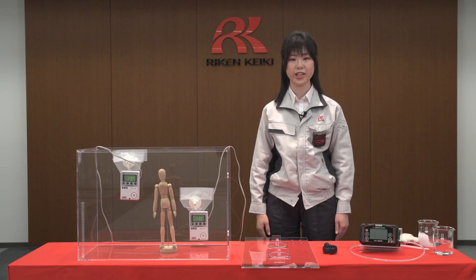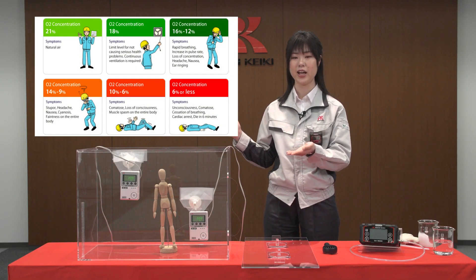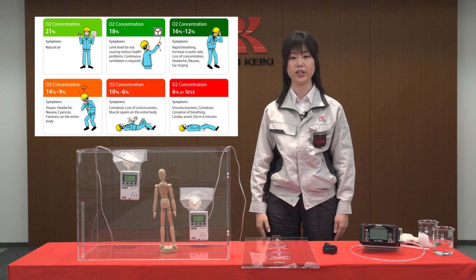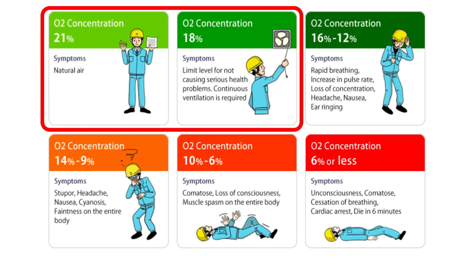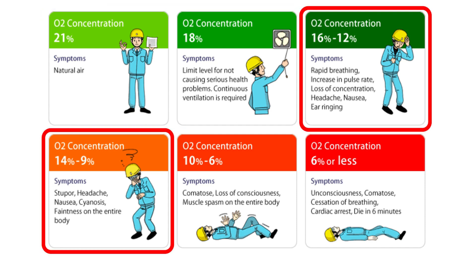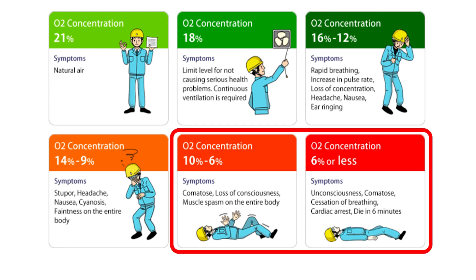Here is what happens to the human body when oxygen levels are depleted. An oxygen concentration of approximately 18% is considered the limit of safety. As oxygen levels gradually decrease, the human body is disturbed and symptoms such as nausea occur. If it falls below 6%, the human body is immediately affected, resulting in unconsciousness or cardiopulmonary arrest.